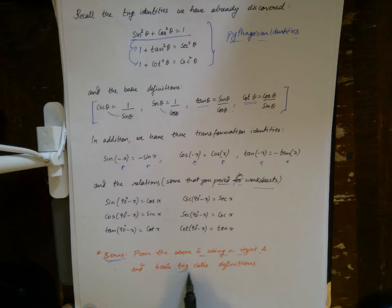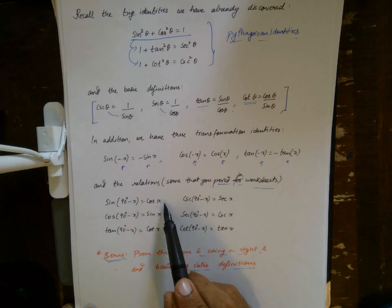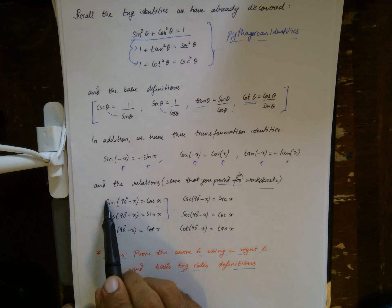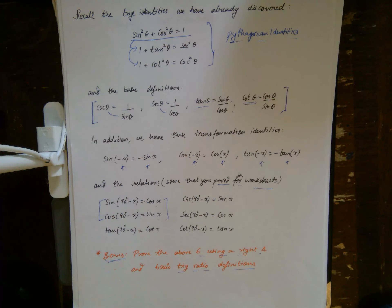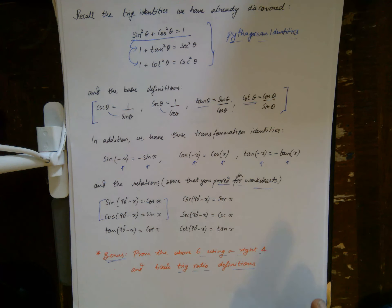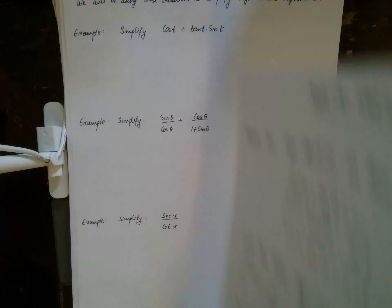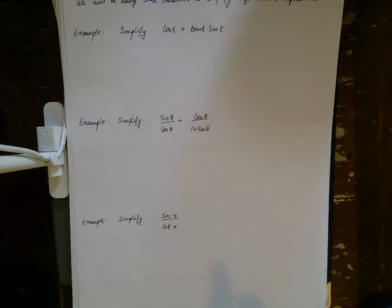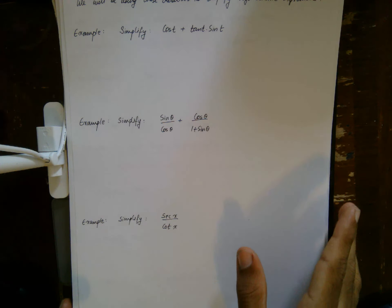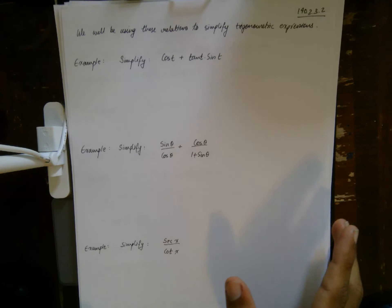The bonus problem is to prove the above six identities using a right triangle and basic trig ratio definitions. One for sine or cosine is already part of the worksheet, and then doing the remaining four is fairly straightforward — you can use the same triangle.